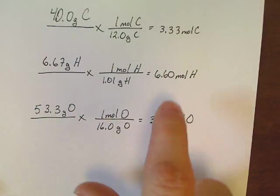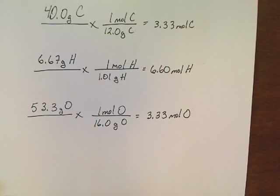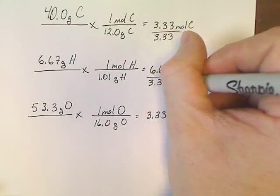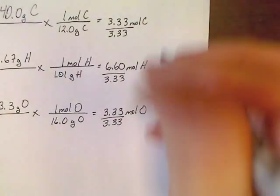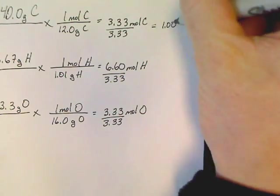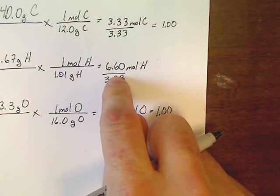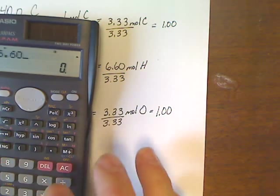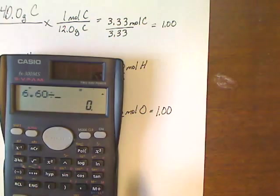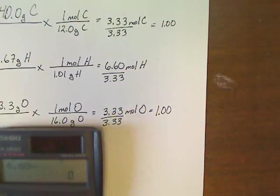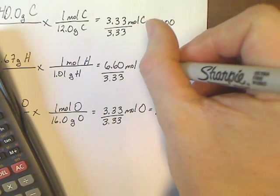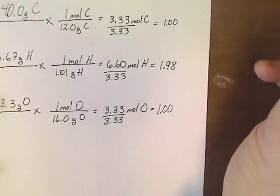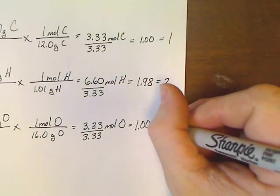Now that we've done this, step two, let's go back and divide each one of these by the smallest. It's obvious that 3.33 is the smallest. That makes this 1.00. This one down here would also be 1.00. The middle one, 6.60 divided by 3.33, 1.98. We go around, 1, 2, and 1.